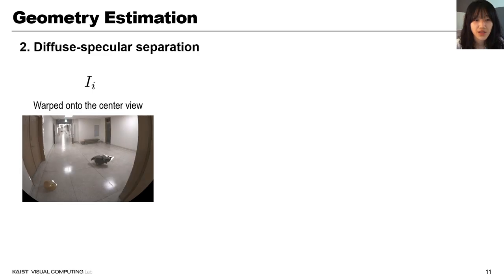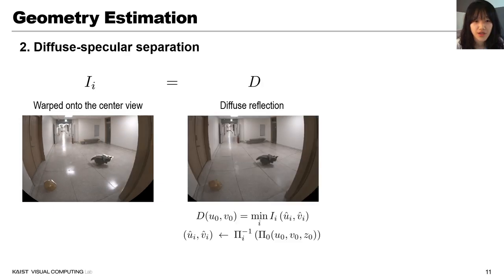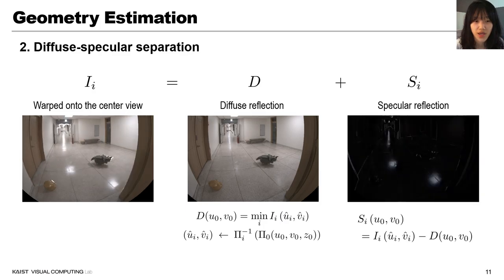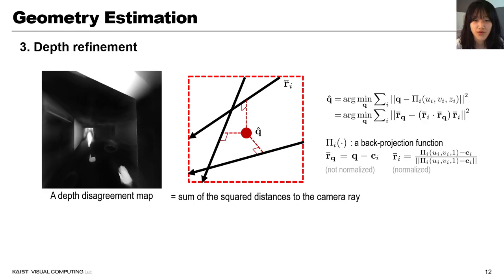Using that initial depth, diffuse and specular components are separated from input images. Diffuse reflection is estimated by the minimum intensity among RAFT views. And by subtracting the diffuse image from the input image, we get specular reflection.